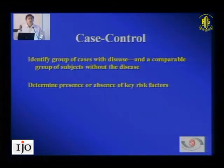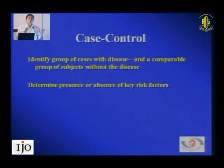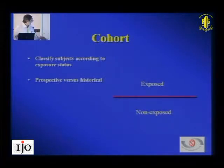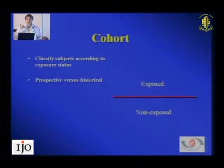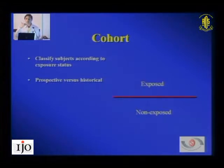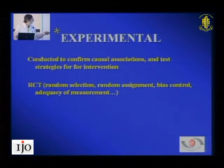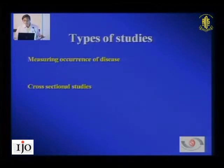In a case control study, I would have 100 patients with the disease and 100 without. But we don't just take them randomly — we have to match them for certain factors. Cohort is basically taking subjects with a specific risk factor and following them up for years. For example, I can take patients with IOP greater than 21, follow them for 5, 10, or 15 years, and see how many develop glaucoma and what the specific risk factors are.